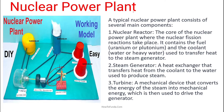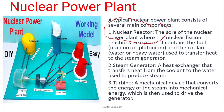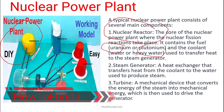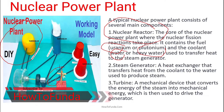Now, what are the various components available in the nuclear power plant? The first is the nuclear reactor — this is the core module where we fuel up two components: either uranium or plutonium. A coolant, either heavy water or regular water, is used to transfer the heat to the steam generator.